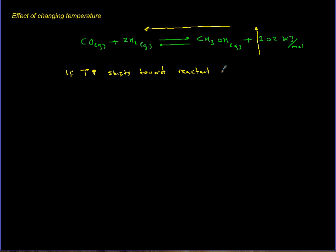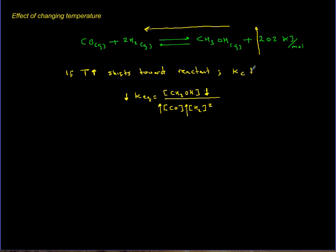K-equilibrium is the products over reactants. It's a homogeneous reaction — all gases. If you increase temperature and shift toward reactants, methanol (the numerator) decreases, while carbon monoxide and hydrogen (the denominator) increase. So K-equilibrium decreases. For exothermic reactions, if temperature goes up, Kc goes down.